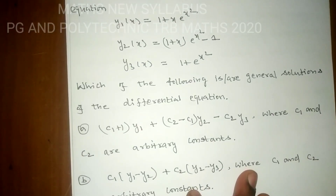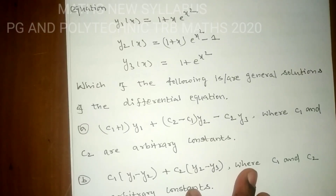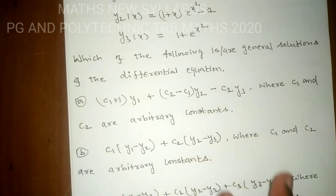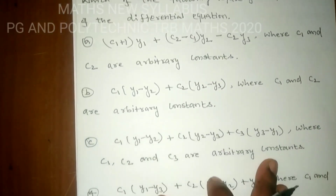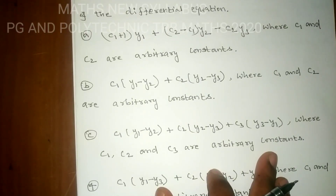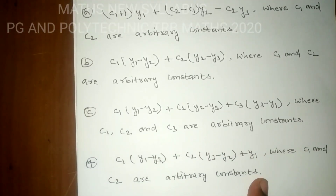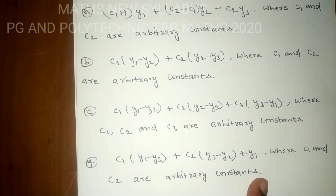Option A: (c1 + 1)·y1 + (c2 − c1)·y2 − c2·y3, where c1 and c2 are arbitrary constants. Option B: c1·(y1 − y2) + c2·(y2 − y3), where c1, c2 are arbitrary constants. Option C: c1·(y1 − y2) + c2·(y2 − y3) + c3·(y3 − y1), where c1, c2, c3 are arbitrary constants. Option D: c1·(y1 − y3) + c2·(y3 − y2) + y1, where c1, c2 are arbitrary constants.